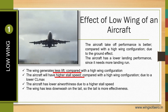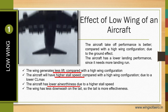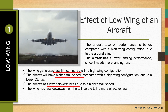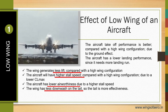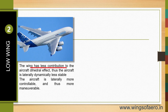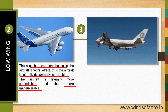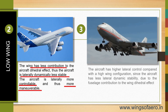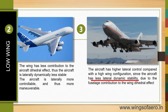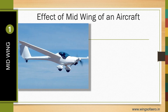The aircraft has lower airworthiness due to the higher stall speed. The wing has low downwash on the tail, so the tail is more effective. The wing has less contribution to the aircraft dihedral effect, making it laterally dynamically less stable. However, the aircraft is laterally more controllable and thus more maneuverable, with higher lateral control compared with the high wing configuration, due to less lateral dynamic stability from the fuselage contributions to the wing dihedral effect.